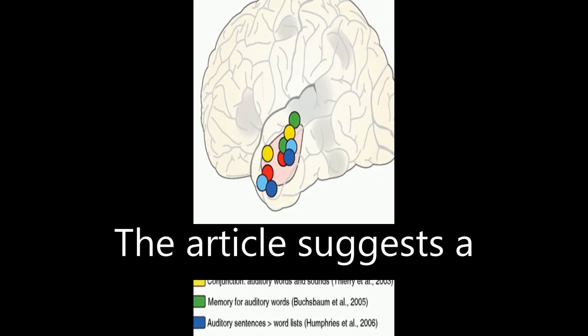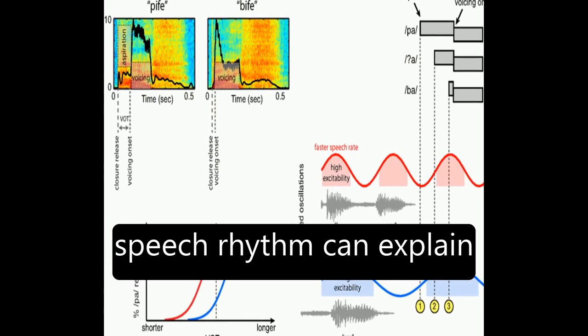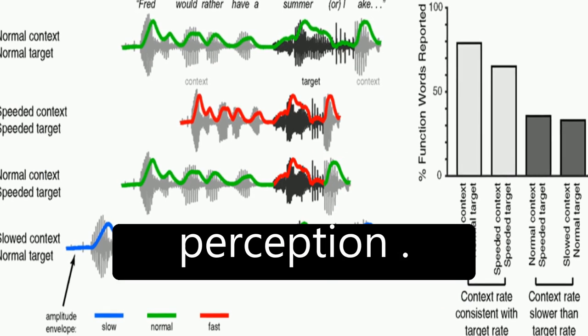The article suggests a framework through which neural entrainment to speech rhythm can explain effects of speech rate on word and segment perception.